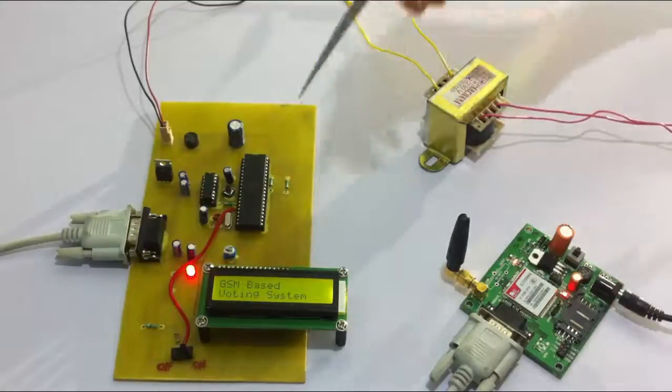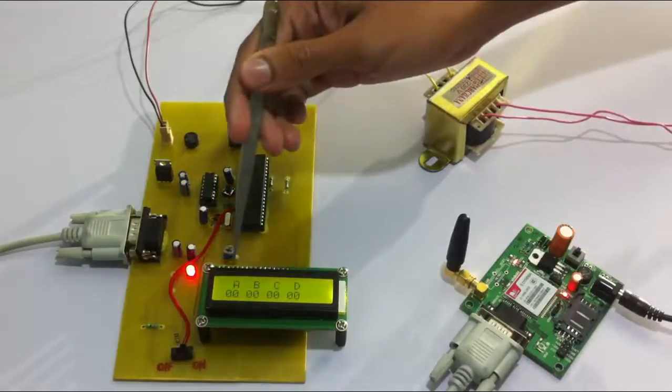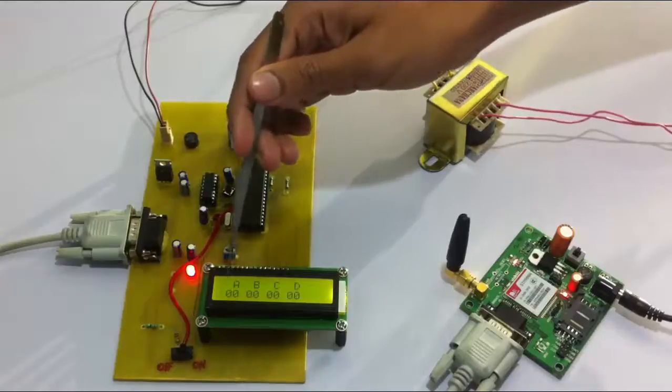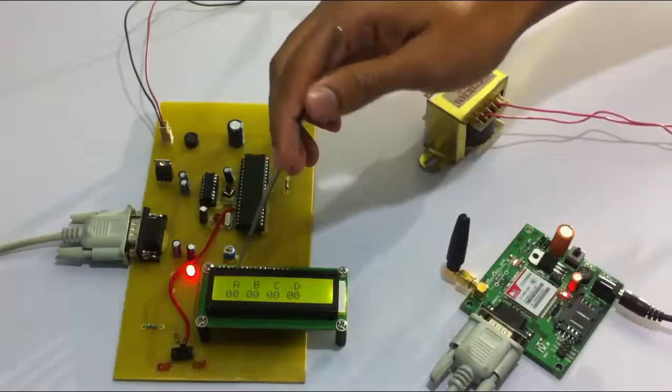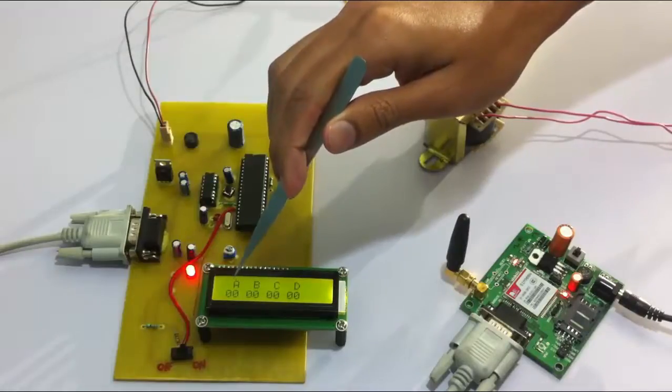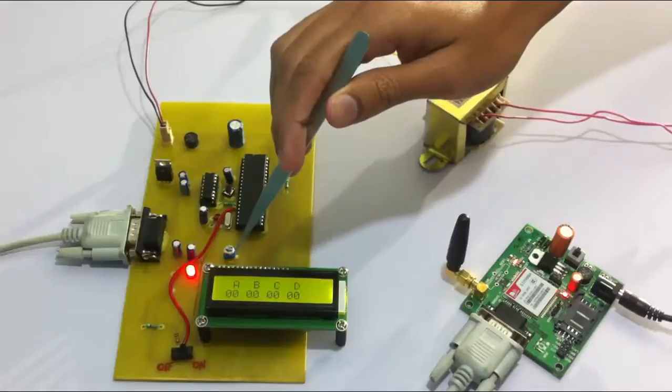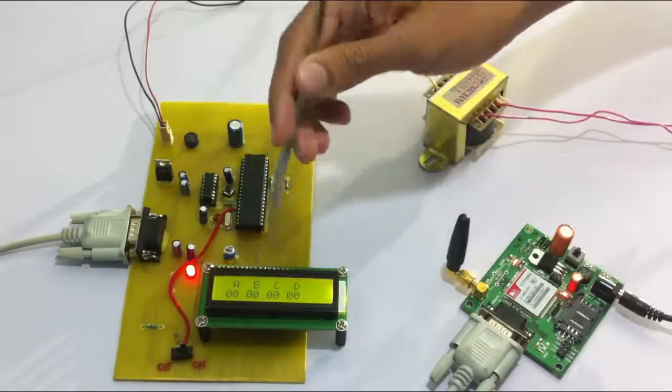Now it displays the project name and says kindly send an SMS to vote. It's now showing four candidates here A, B, C and D and this number, as you can see here, is the number of votes that has been provided to that particular candidate.